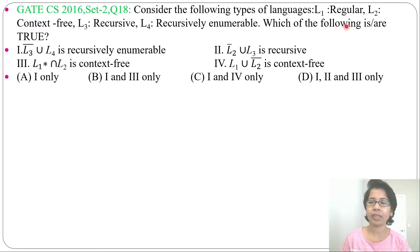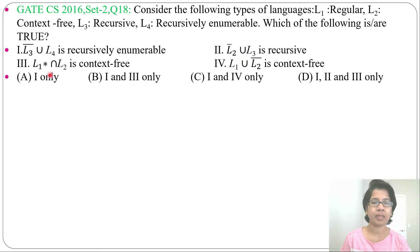Which of the following is or are true? First statement: L3 complement union L4 is recursive enumerable. Second statement: L2 complement union L3 is recursive. Third statement: L1 Kleene closure intersection L2 is context-free. Fourth statement: L1 union L2 complement is context-free.